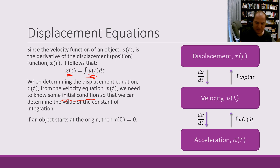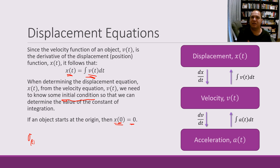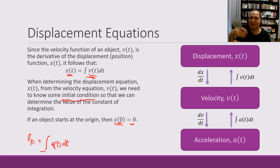The key note is that if an object starts at the origin, that just means that at time zero our displacement x(0) is equal to zero — that's what it means by starting at the origin. We can also extend this to acceleration problems, because since acceleration is the derivative of velocity, our velocity function is the integral of our acceleration function with respect to time. So if we've got our acceleration function we can anti-differentiate it to get velocity, and once we have velocity we anti-differentiate one more time to get displacement.